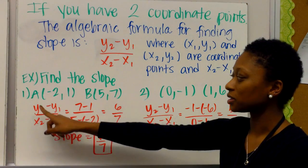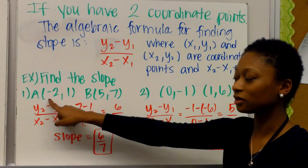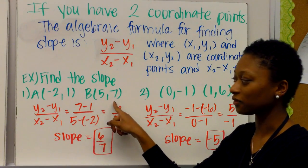Now, x1 and y1 and x2 and y2 are coordinate points such that x2 minus x1 is not zero. Example, find the slope. Say we have the point a, negative 2, 1, and the point b, 5, 7.